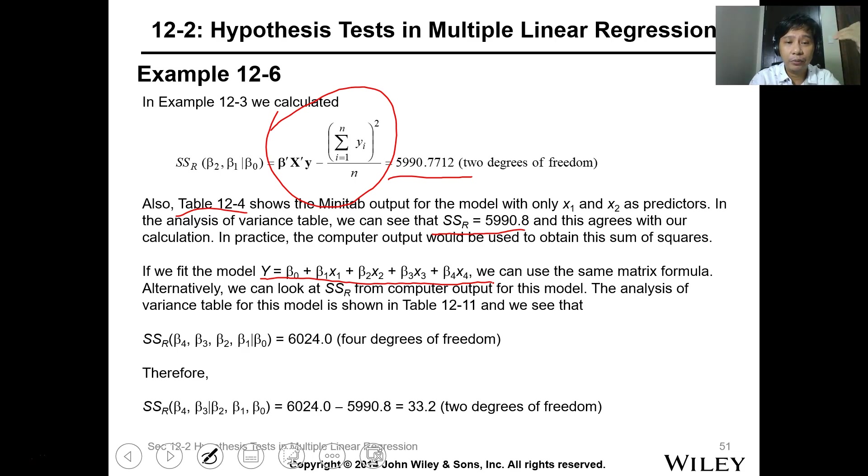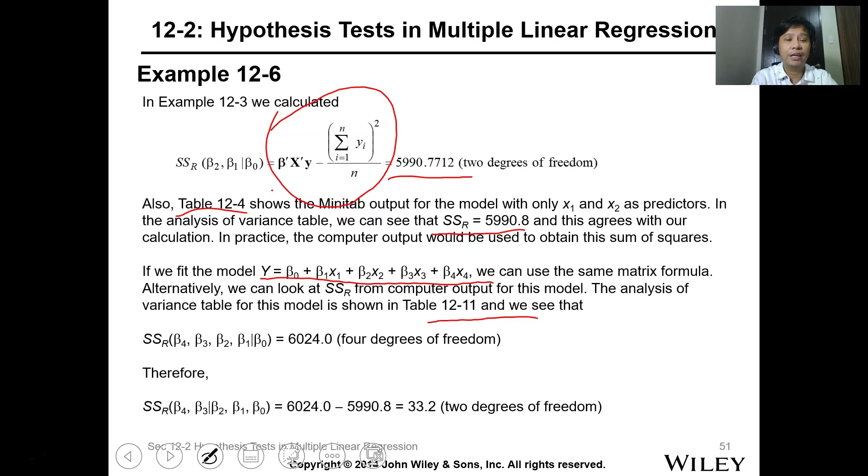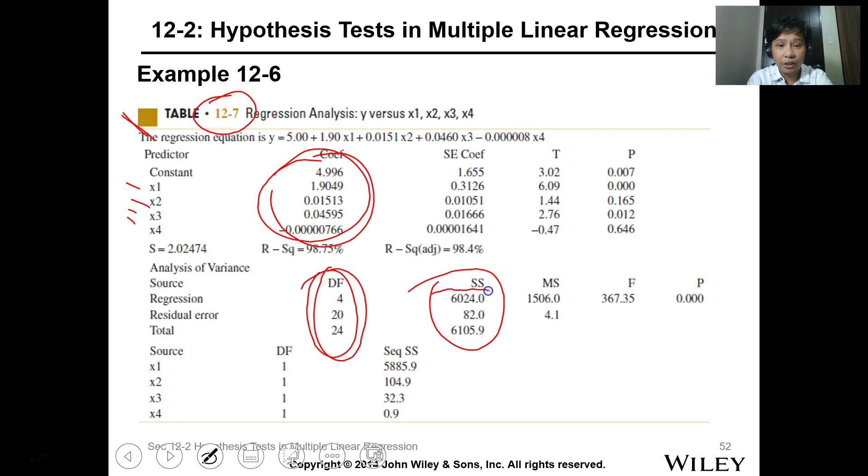Alternatively, we can calculate for the SSR. This model is shown in Table 12-7 regression. So this is the data. You can see there are new variables, so there are four variables now. The degrees of freedom is different now.